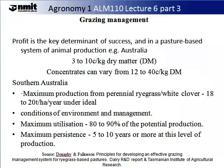In farming, profit is the key determinant of success. In a pasture-based system of animal production such as we have in Australia, profitability is closely linked to the utilisation of pasture as this is the cheapest source of feed. Across both Australia and New Zealand, pasture production tends to vary between 3 and 10 tonnes of dry matter per paddock. However, if the pasture is not managed properly, an increasing amount is wasted and the productive life of the pasture is reduced, making it a more expensive source of feed.